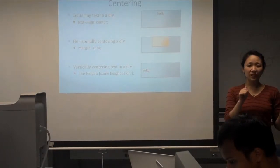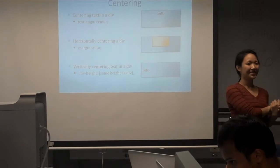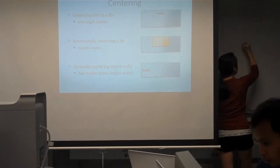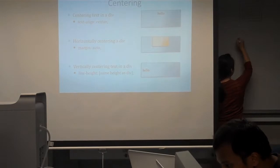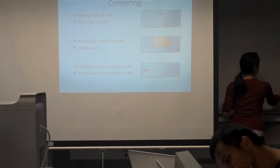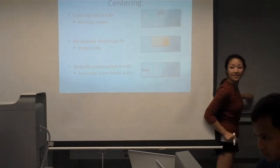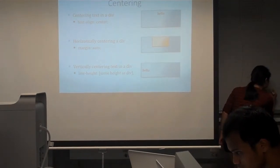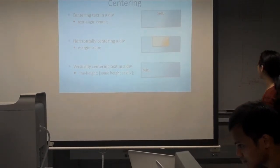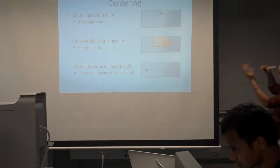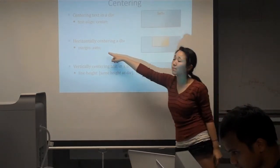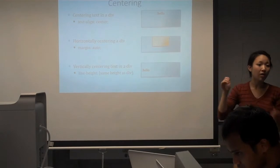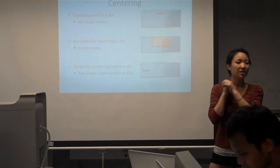Do you guys remember what margin is? What's the difference between margin and padding? So here's your element. You have something on this side, and then something inside. So which one's margin and which one's padding? Padding is inside, and then which one's margins? So what margin auto basically does — you can have top and bottom and left and right margins. When you say margin auto, it actually measures out the left and right ones and calculates it for you. So no matter how big or how small you make your browser window, it'll make them equal so that it's centered.